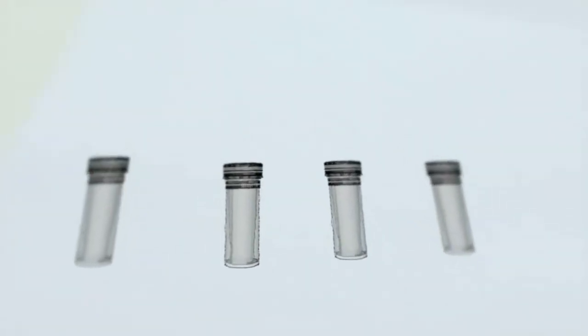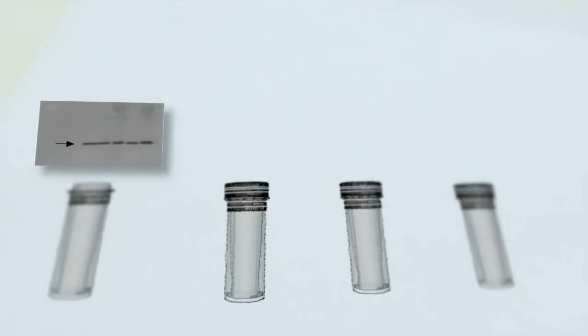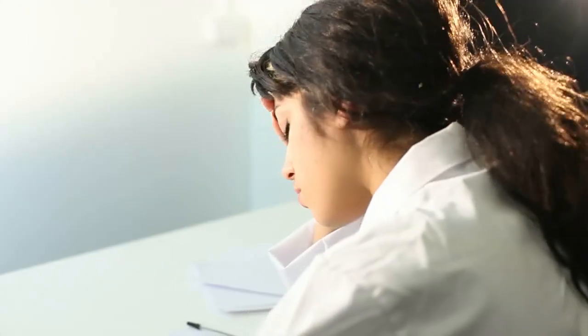Maybe your first antibody gave a very clean and crisp band on a Western, but the new batch you just received shows multiple bands. Could it be the antibody?